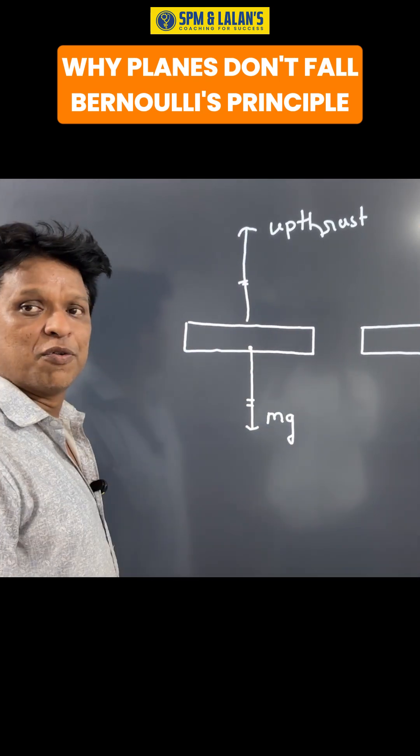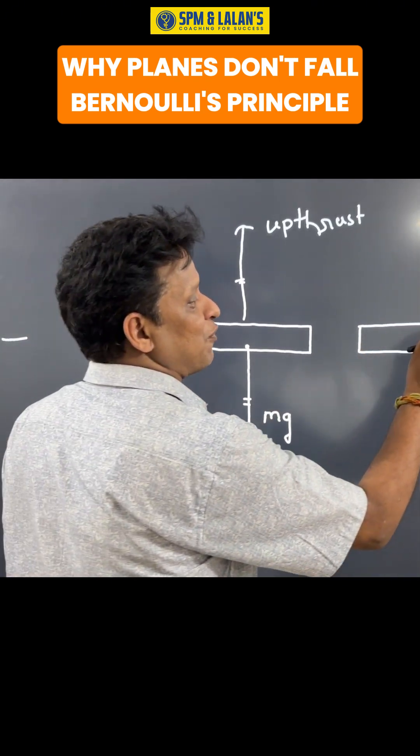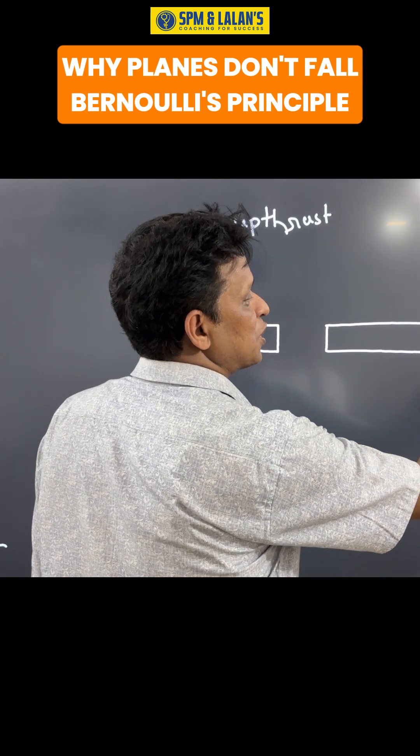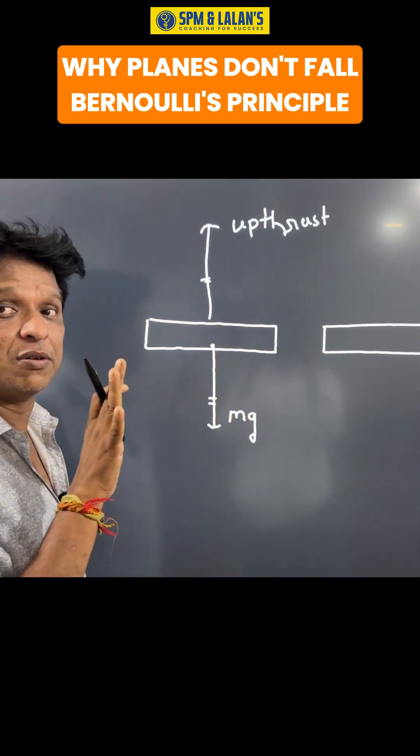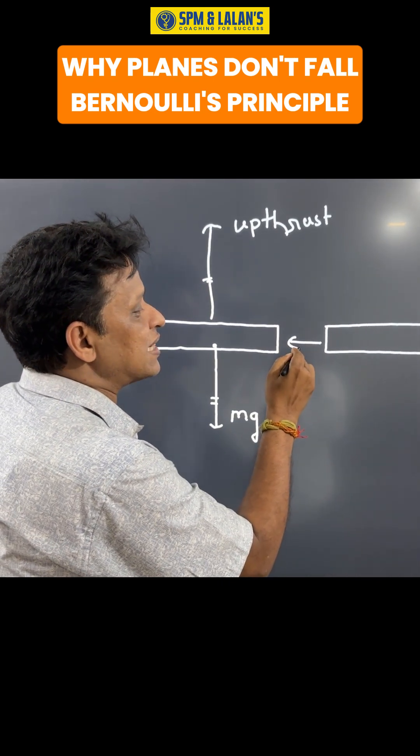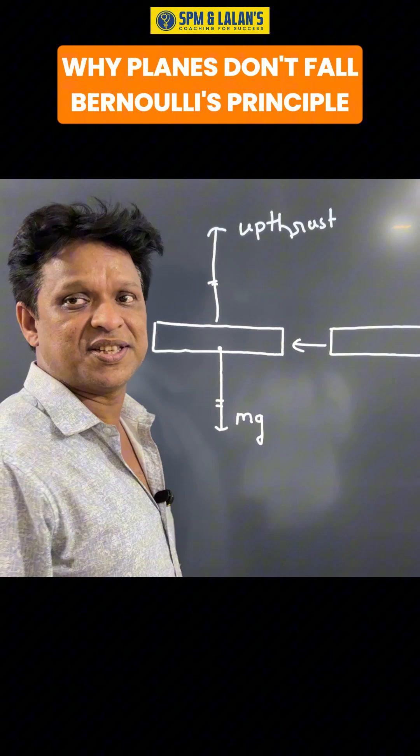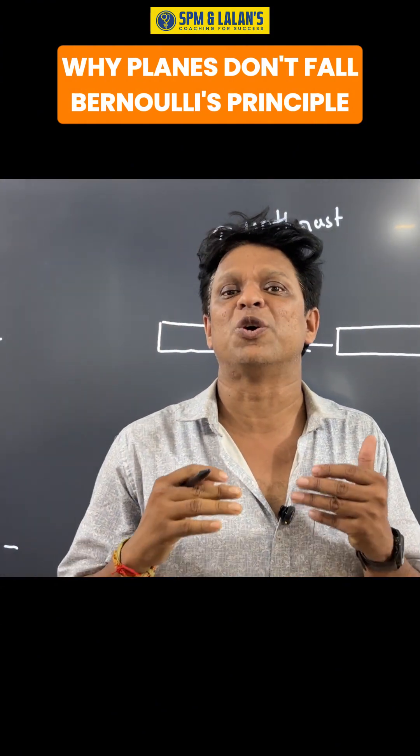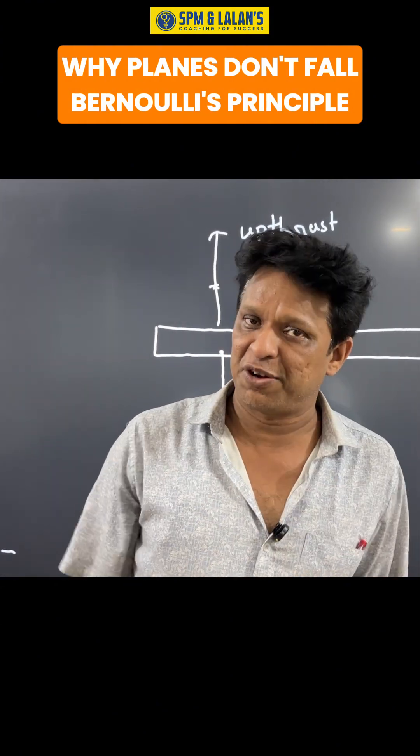Moreover, the engine provides a forward force. Because of this forward force, it goes in the forward direction and overcomes the backward resistance. Due to all these reasons, the airplane remains suspended and moves forward in the air. Thank you very much.